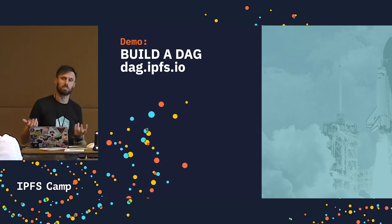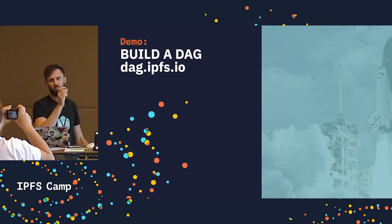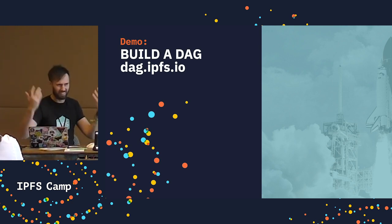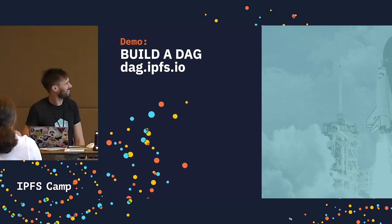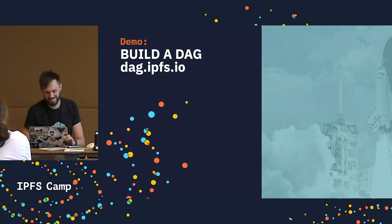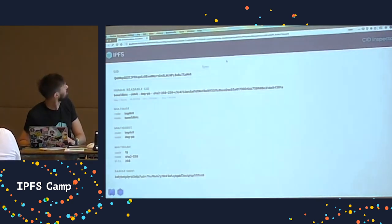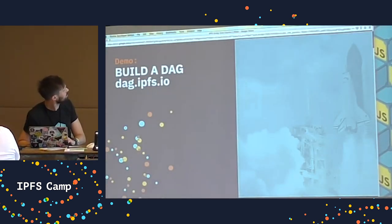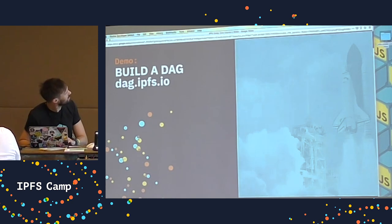You can try this out at dag.ipfs.io — drop a small file, like less than 100k, onto it. People have been dropping like 5 MB files, and it tries to render a graph of a million nodes, which makes browsers start whirring. So just drop a small file. If you go too small you'll just get a single node, so there's a sweet spot.